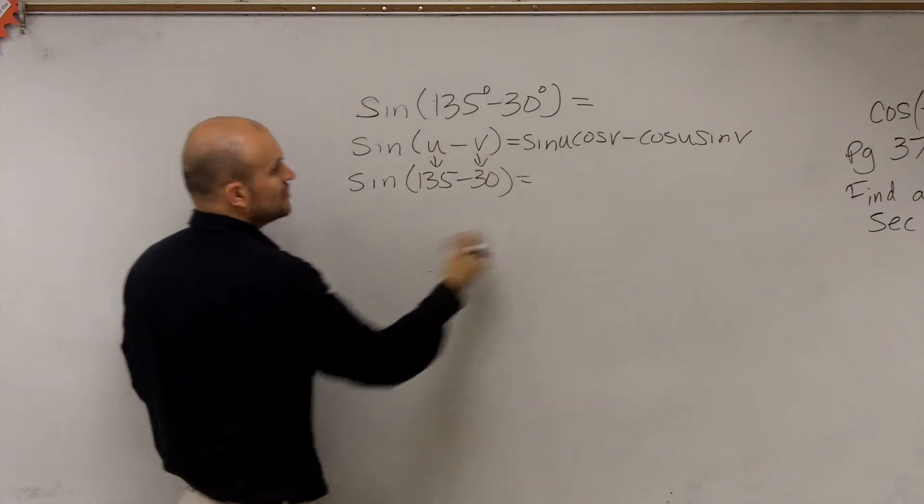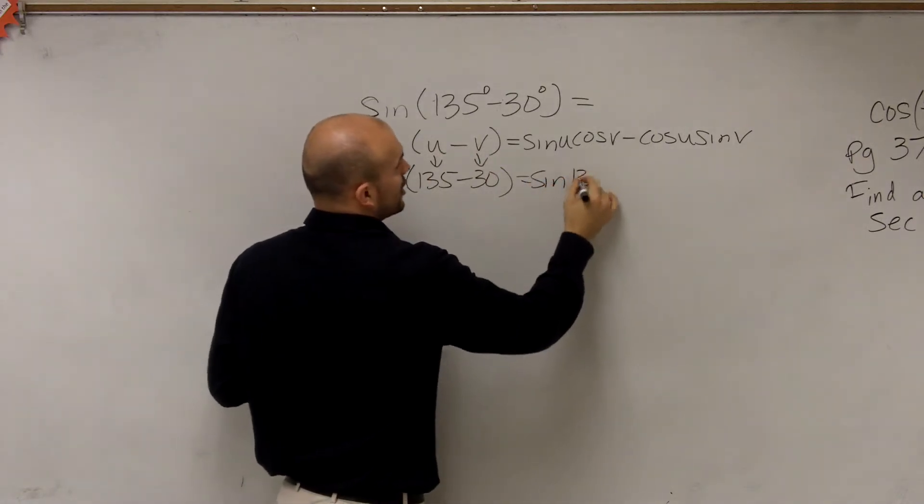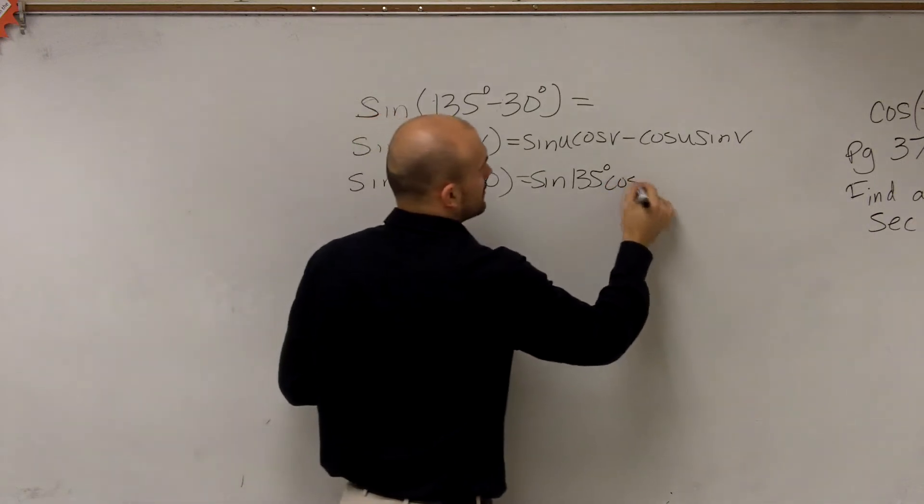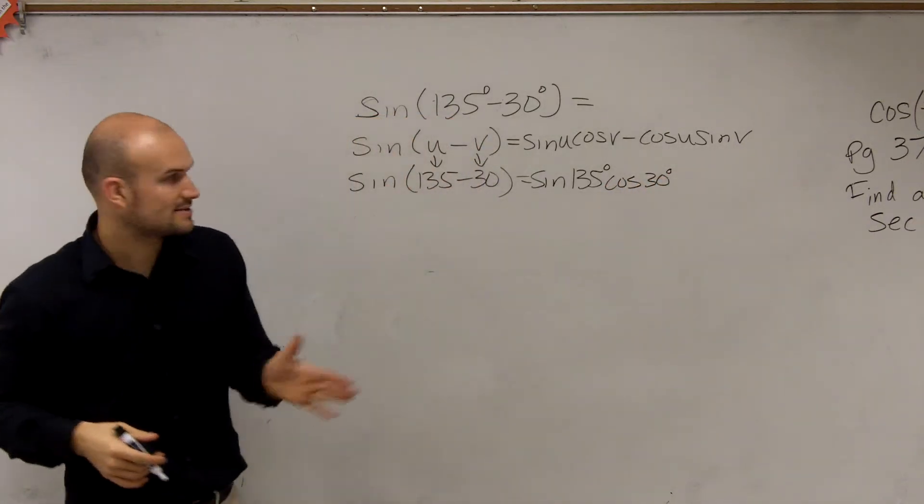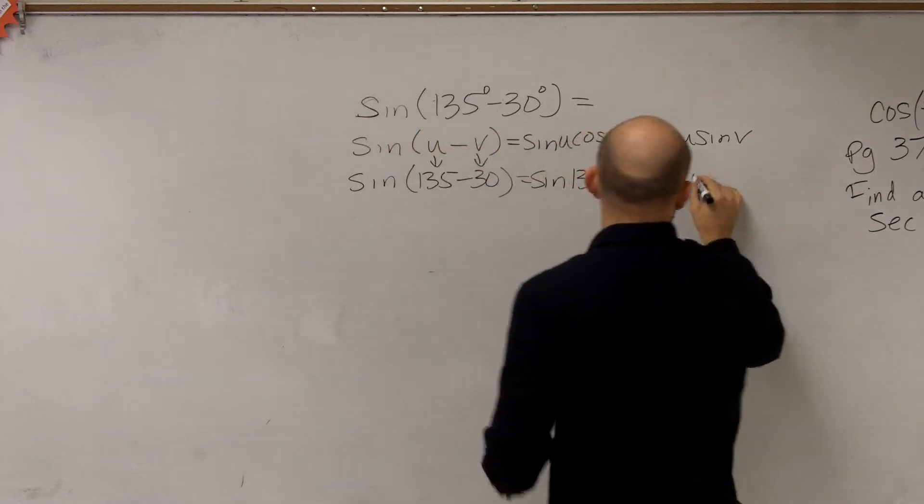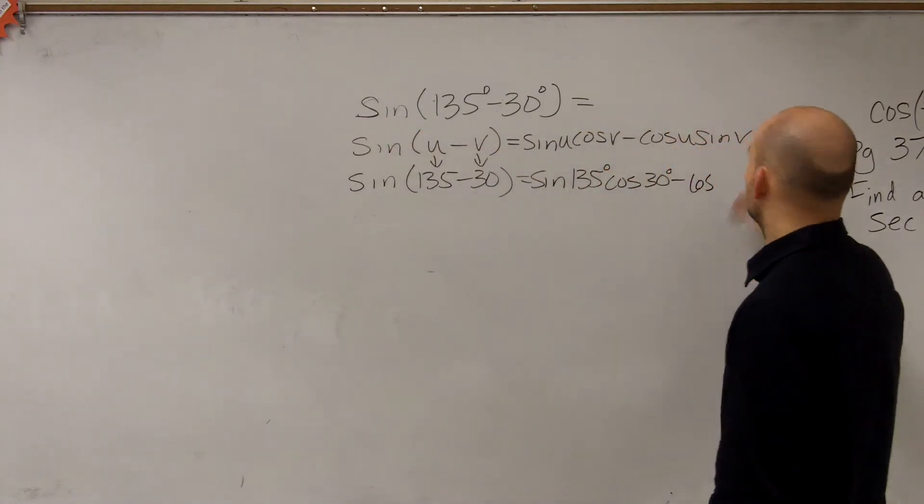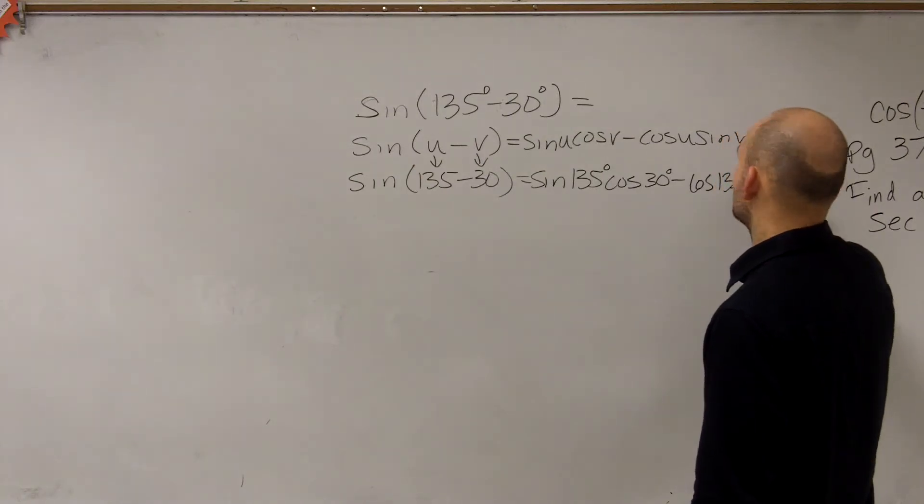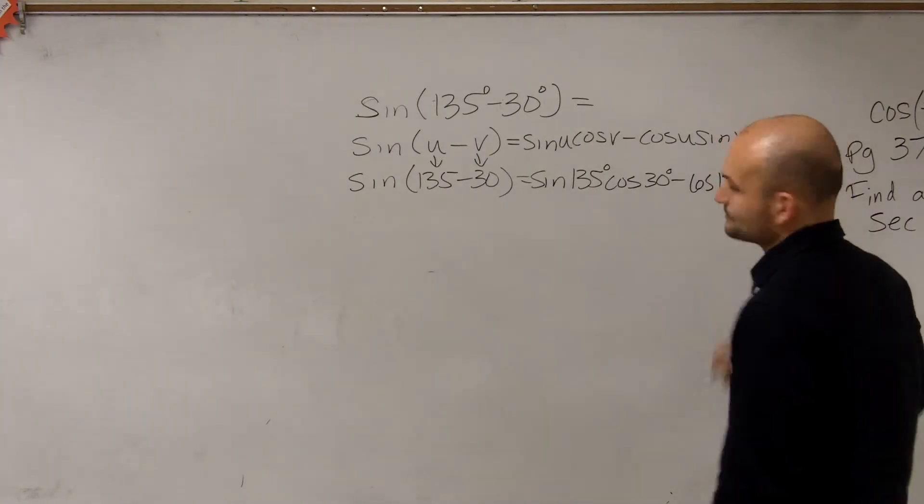You just need to understand that my v is 30. So when I say find the sine of u, that's going to be the sine of 135 degrees. The cosine of v is going to be 30 degrees. Then we're going to do minus cosine of u, which is 135, and times the sine of v, sine of 30 degrees. All right?